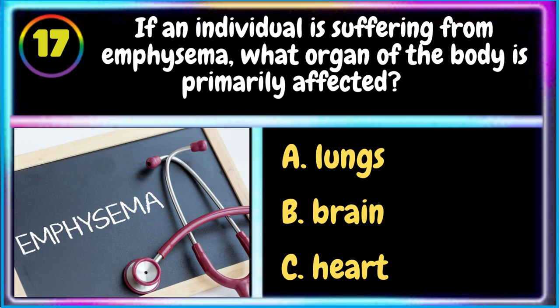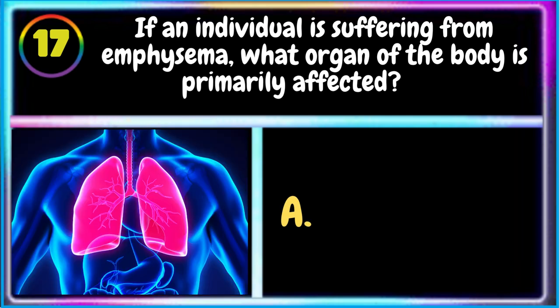17. If an individual is suffering from emphysema, what organ of the body is primarily affected? A. Lungs B. Brain C. Heart. The correct answer is A. Lungs.